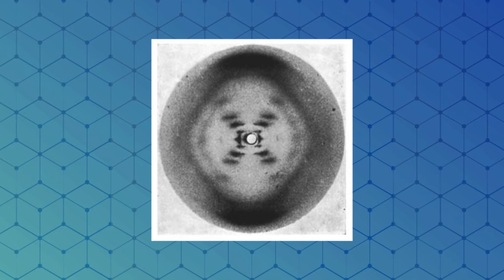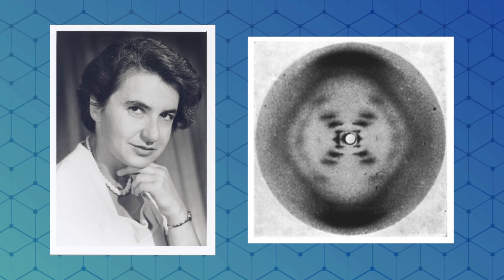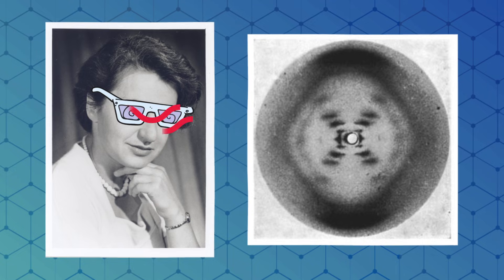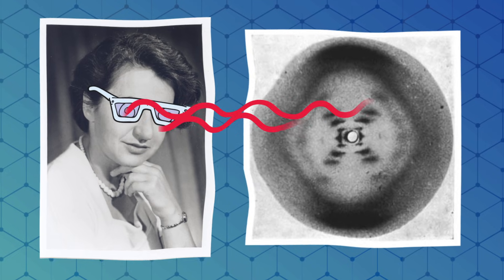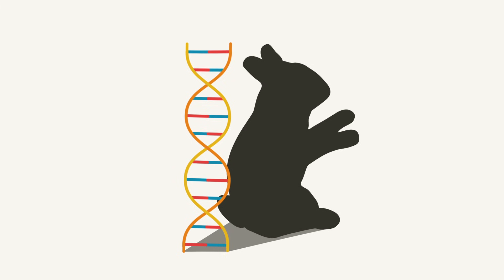Rosalind Franklin's famous image that solved double helix structure was made by shooting DNA with X-rays, which are also smaller than visible light. But it isn't really a picture of DNA. It's more like DNA's shadow.